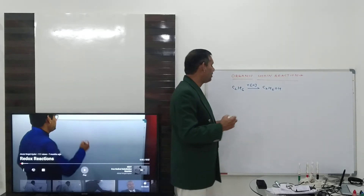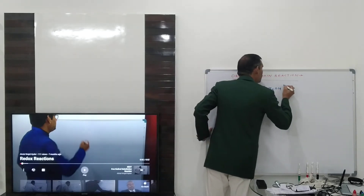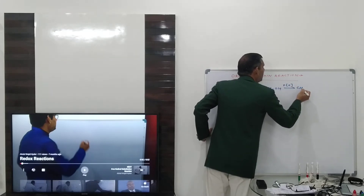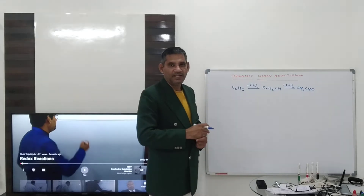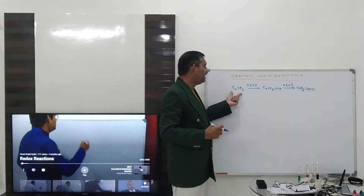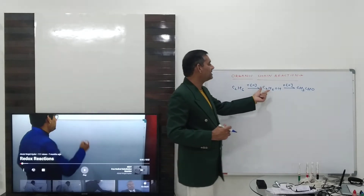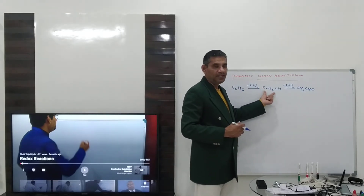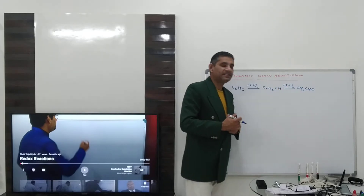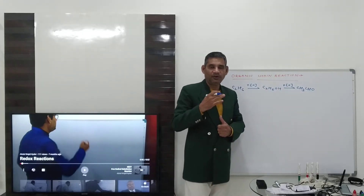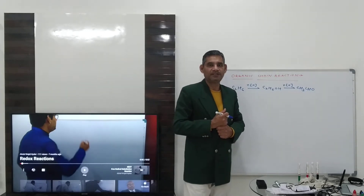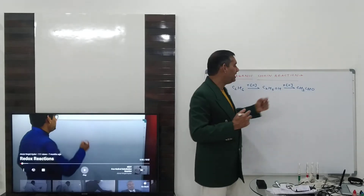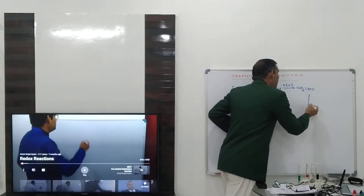This ethyl alcohol on further oxidation gives aldehyde: CH3CHO, that is acetaldehyde, that is ethanal. So ethane on oxidation gives ethanol, ethanol on oxidation always gives aldehyde, alkene on oxidation will always give alcohol, alcohol on further oxidation always gives aldehyde, and aldehyde on further oxidation always gives carboxylic acid.